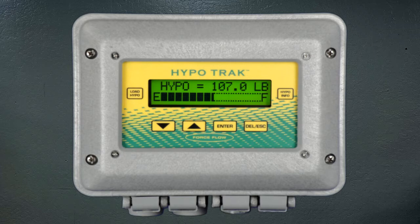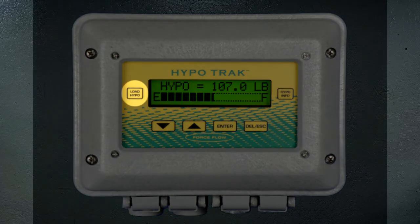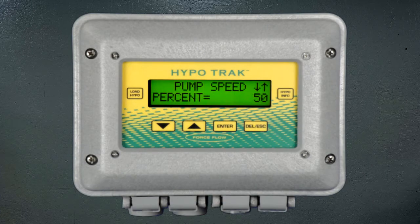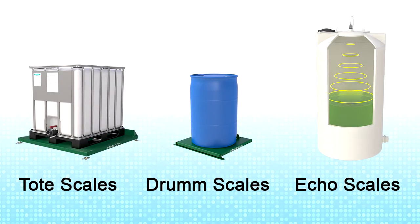The difference with the HypoTrack is that it has a custom software program that allows you to get specific information, alarms, and controls specific to your sodium hypochlorite inventory. It is used in conjunction with any one of our weighing scales or ultrasonic level sensors, and cost-wise is comparable to the Solo G2.